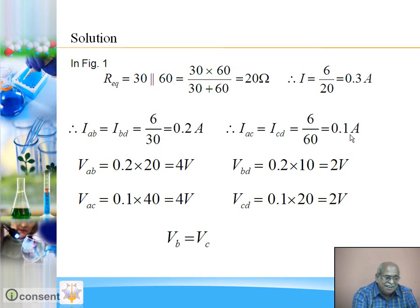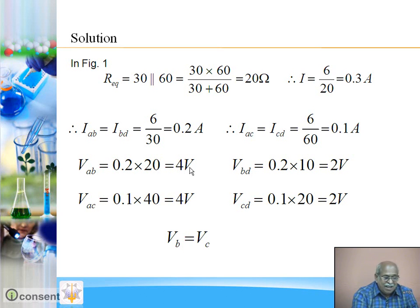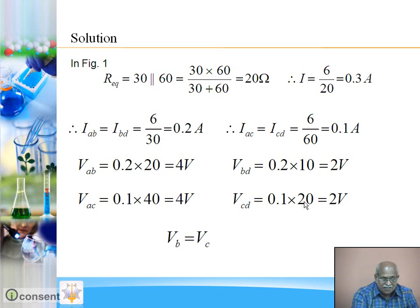Now, potential difference across each resistance, again using Ohm's law V equals IR. VAB: current is 0.2, resistance is 20, so VAB is 0.2 into 20, which is 4 volt. VBD: current is 0.2, resistance is 10, so potential difference is 2 volt. VAC: current is 0.1, resistance is 40, so VAC is 0.1 into 40, which is 4V. VCD: current is 0.1, resistance is 20, so VCD is 2V.